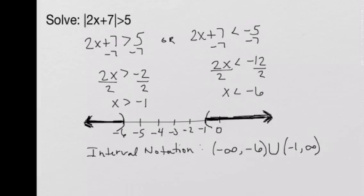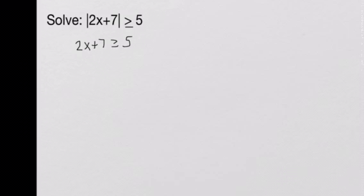Let's look at a third example to understand brackets versus parentheses. This problem is similar to the previous one, with the same numbers 2x plus 7 in absolute value and 5 on the right-hand side. The one change is we now have greater than or equal to 5 instead of just greater than 5. That is where we begin seeing brackets used. We solve it the same way, but this time we have the or equal to to consider.